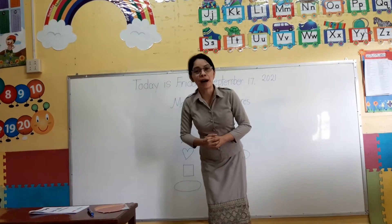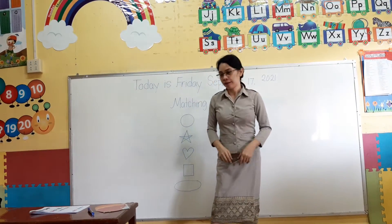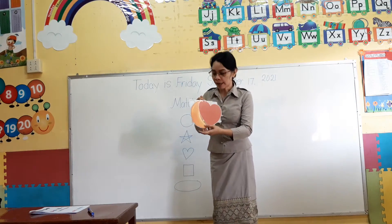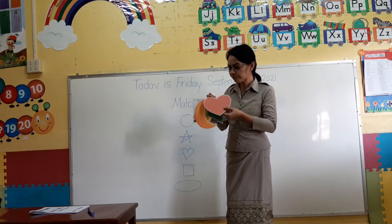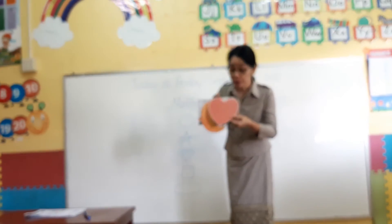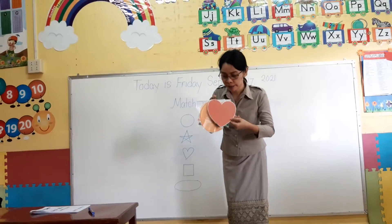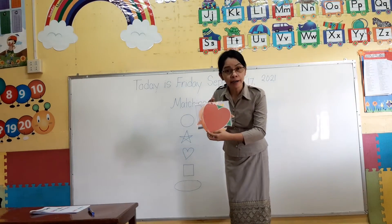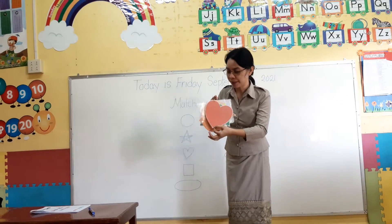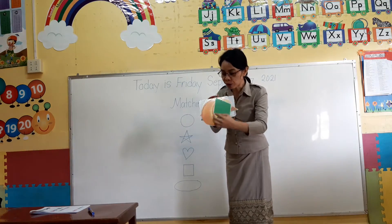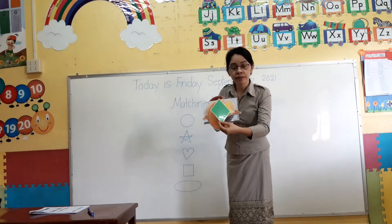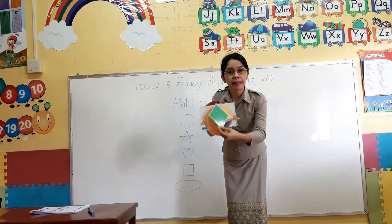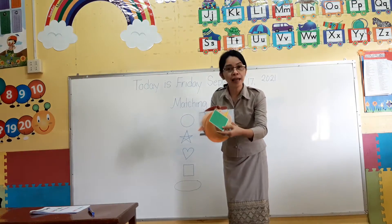And we will talk about the shapes. Do you know what shape is this? Can you say it with me? What's this? Heart. Yes, the shape of this is heart. Heart shape. And this one, do you know what shape is this? This is called diamond. Say it with me, diamond.